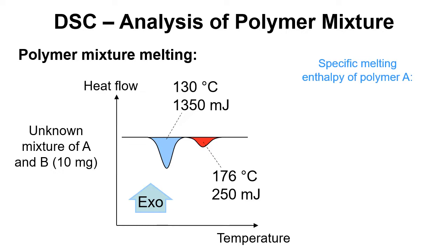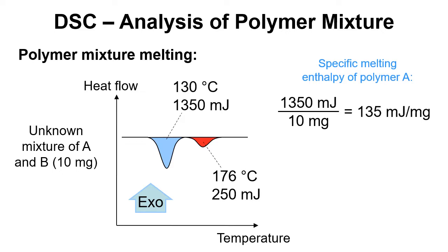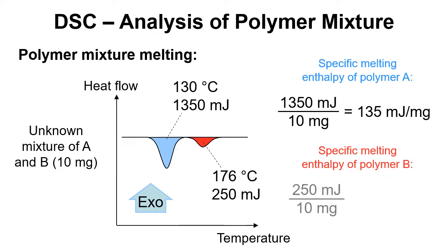We need to work out the specific melting enthalpy of polymer A in the mixture — how many millijoules per milligram are required to melt it. We take the enthalpy in millijoules and divide by the mass, which gives us 135 millijoules per milligram. Doing the same for polymer B gives us 25 millijoules per milligram.